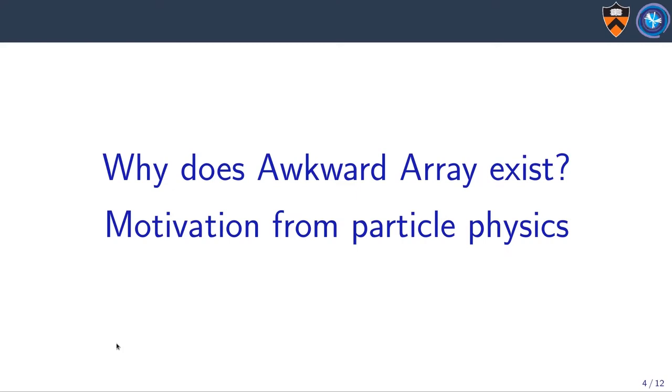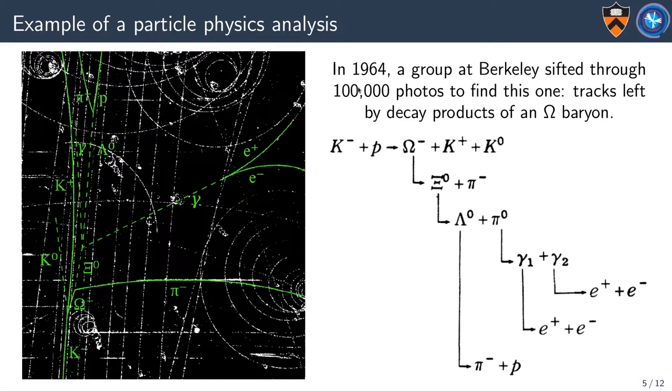Let's start by talking about why does Awkward Array exist. In 1964, a group at Berkeley sifted through 100,000 photos to find this one: tracks left by the decay products of an omega baryon. The omega decayed into a xi, the xi decayed into a lambda, and the lambda decayed into pions and protons. They only knew that this was an omega because they could reconstruct the entire decay chain.